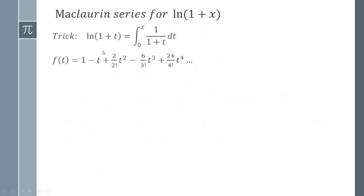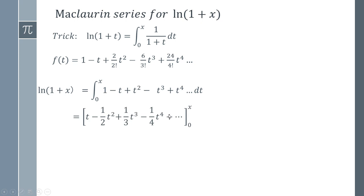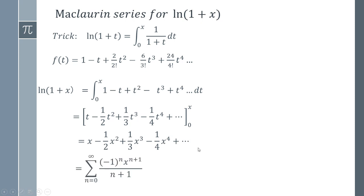Let's remind ourselves of what we've done: we found the Maclaurin series of 1/(1+t), and established that ln(1+t) equals the integral of that expansion. We simply integrate term by term: 1 becomes t, t becomes t²/2, and so on. Evaluating from 0 to x, we end up with the expansion for ln(1+x) — and we can write that as a series to get our final answer.